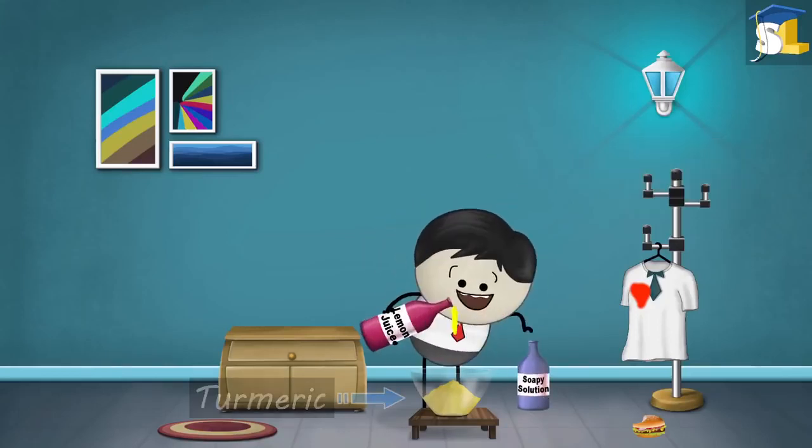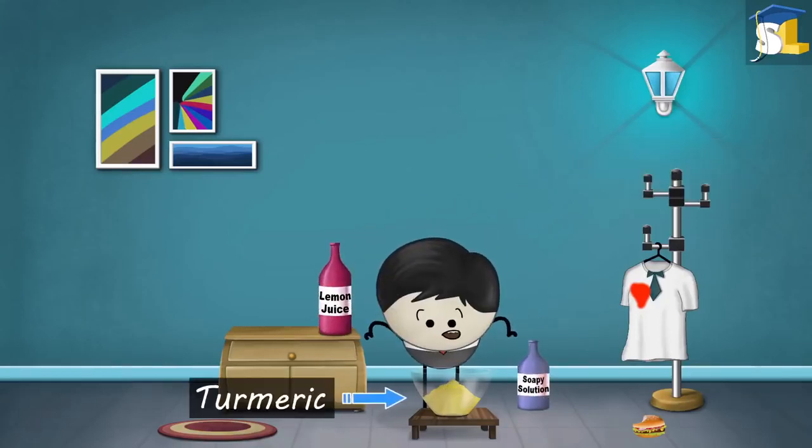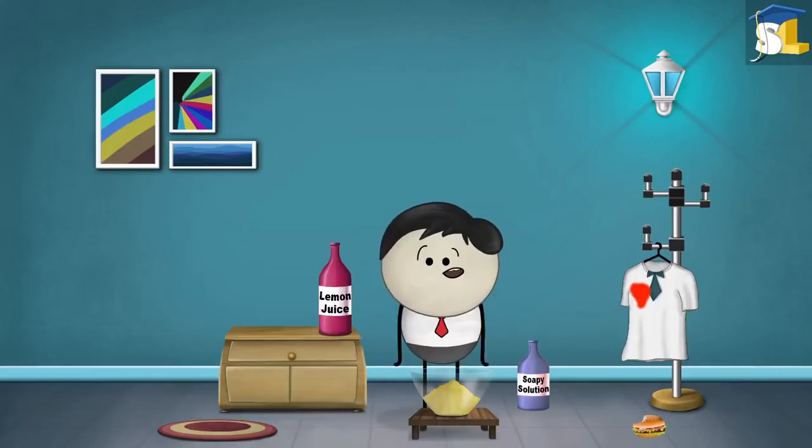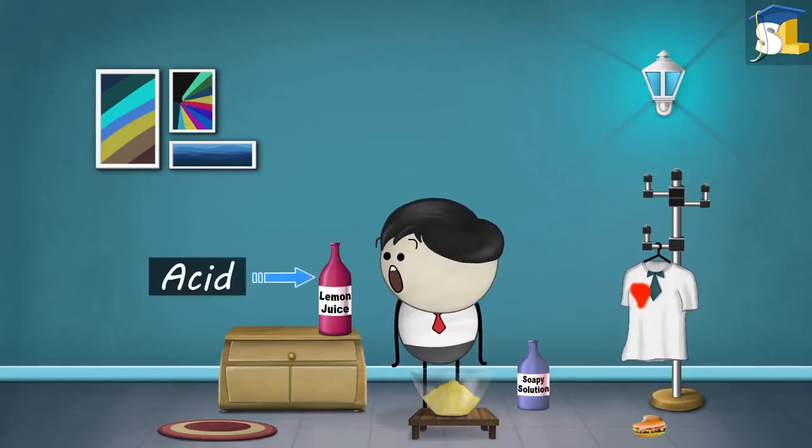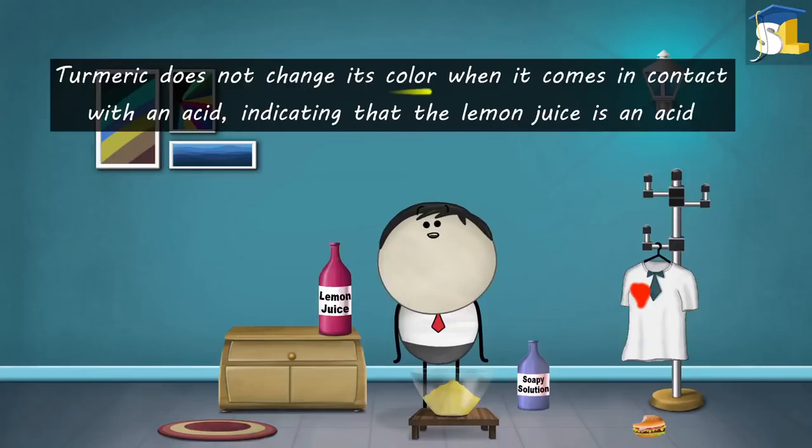When we pour the lemon juice on the turmeric powder, we see that the color of turmeric powder is still yellow. This is because lemon juice is an acid. Turmeric does not change its color when it comes in contact with an acid, indicating that the lemon juice is an acid.